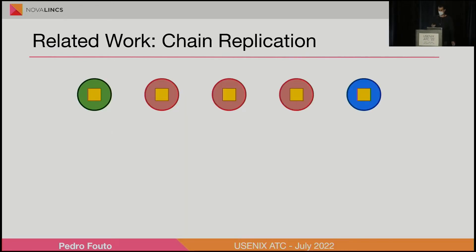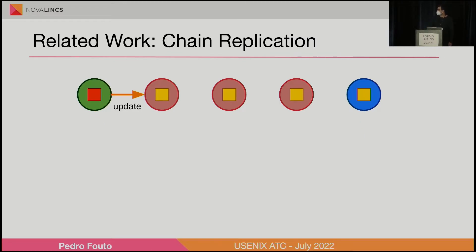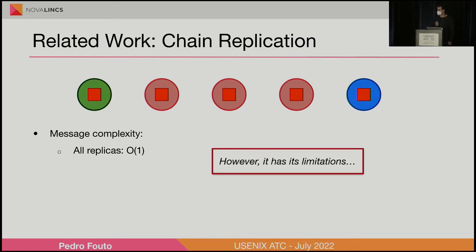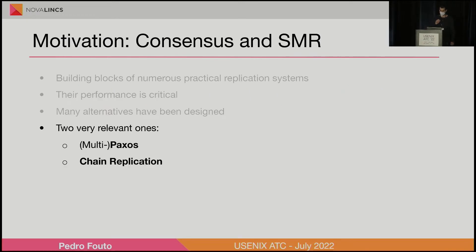Then we have chain replication. Chain replication is quite simple — we have a head and a tail. When we want to create an update we just propagate it through the chain until it reaches the tail. It has the very useful property that each replica only deals with a single message. However, it has its own limitations and we'll get there soon.